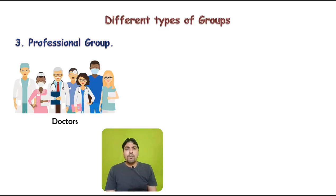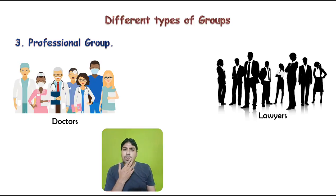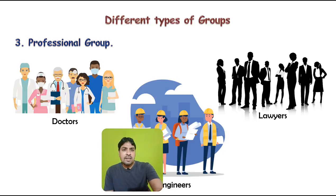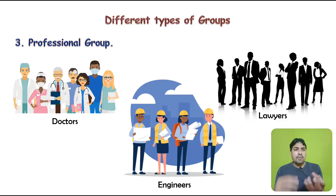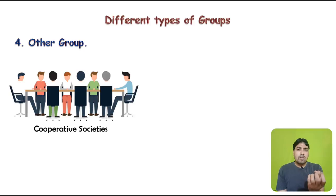The next type is the professional group. Doctors with a recognized association can prepare a group insurance contract, and if any doctor dies while still a group member, they receive the policy amount. Similarly, lawyers with a recognized association can insure their lives under a group insurance contract. Engineers' groups can also be insured under group insurance. Other groups include cooperative societies, whose members can also avail the benefits of a group insurance policy.